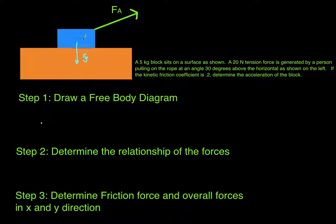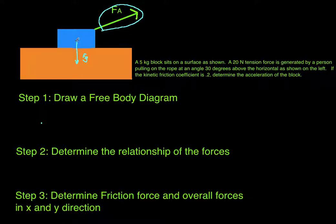Another force that's acting on this box is the applied force, which we can see here — that's pulling up and to the right. Another force that's acting is the normal force. We know the normal force always acts perpendicular to the surface which the box is on. And since we are given a kinetic friction coefficient, we do have to consider the kinetic friction force, which is going to be acting to the left.